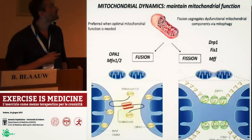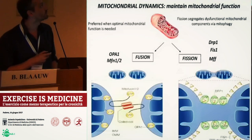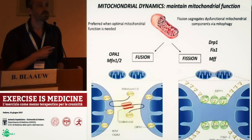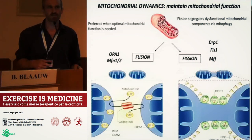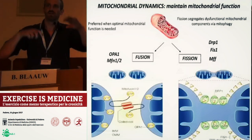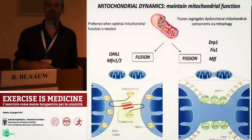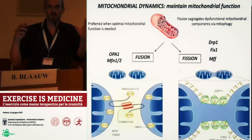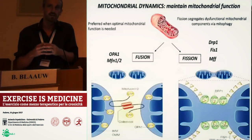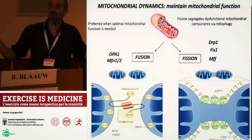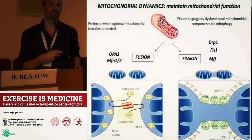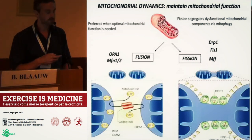Everybody knows the image from textbooks of a mitochondrion depicted as quite static. This is actually not how it is within a skeletal muscle — it exists within a network and this is a very dynamic regulation. Mitochondria are fusing together, they are separating, they are degraded, they are generated. So this is a very active process.